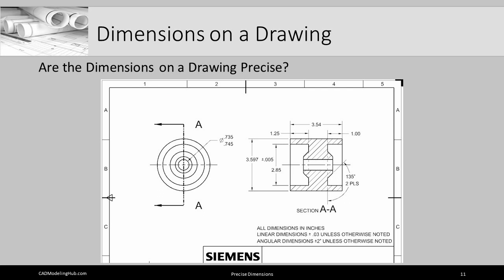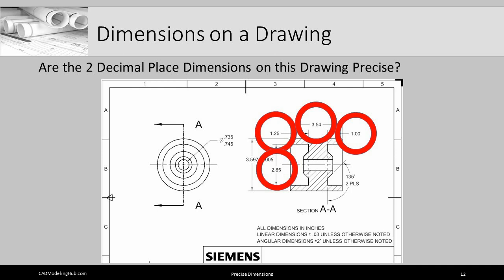So when we're talking about dimensions, dimensions represent the nominal or the ideal length or the ideal dimension. But because we cannot make anything perfect to a perfect dimension, we have to talk about a range of acceptable lengths or acceptable locations, acceptable sizes that we are willing to call good or good enough in our design. So here we have a drawing that has a number of dimensions on it. And we need to talk about are these dimensions precise? And we need to discuss what we mean by precise. So let's look first at the two decimal place dimensions and ask the question, are these dimensions precise?